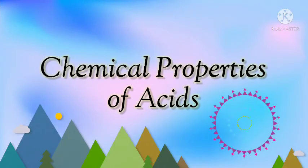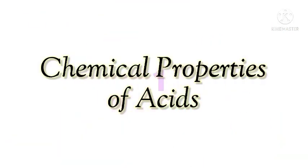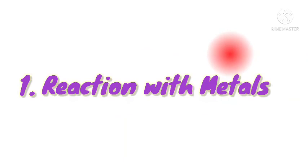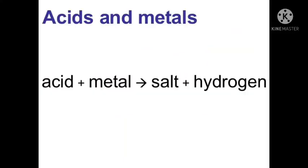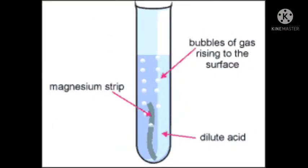Now, let us see the chemical properties of acids. First, reaction with metals. Dilute acids react with some metals to produce salt and hydrogen gas.